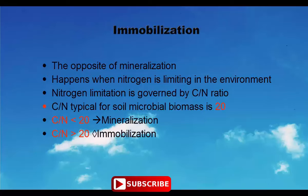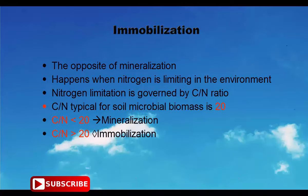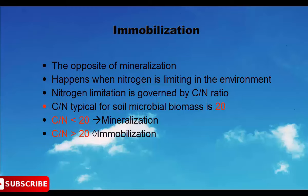Nitrogen limitation is governed by the C:N ratio. The typical C:N ratio for soil microbial biomass is 20.